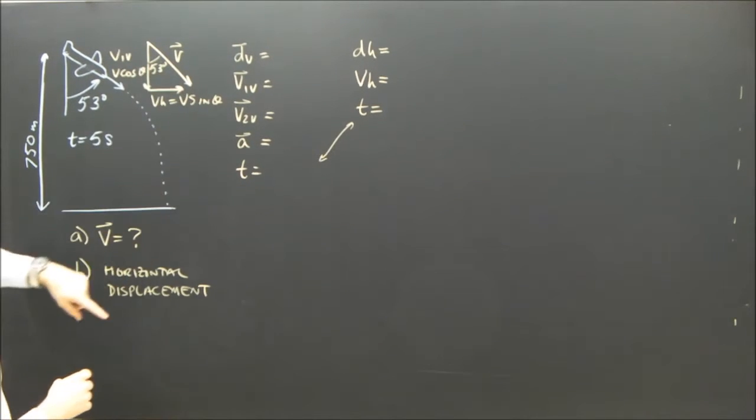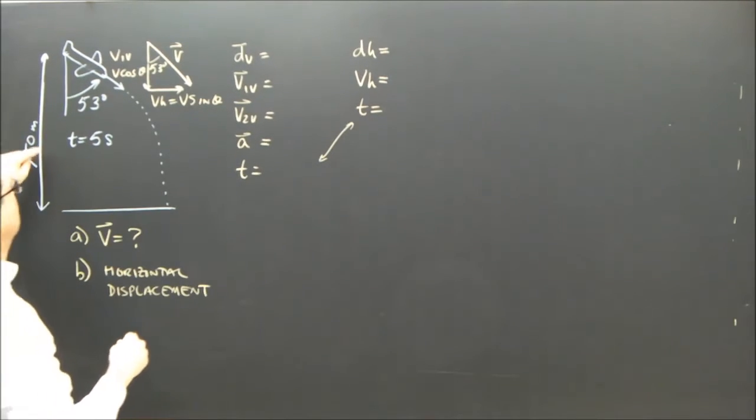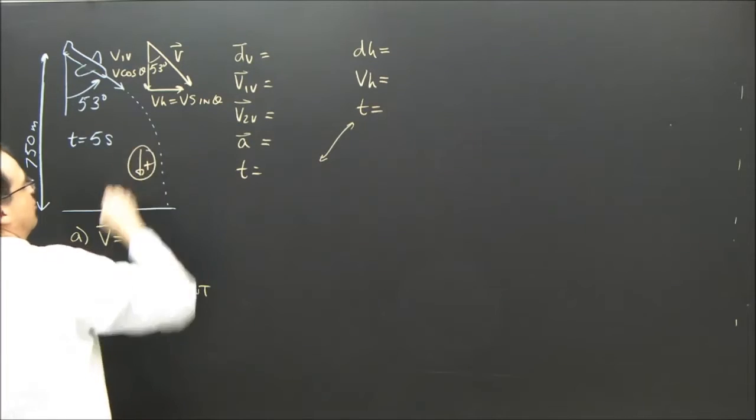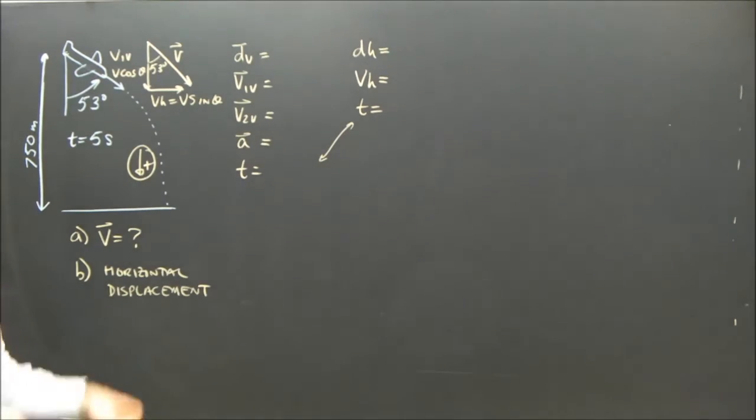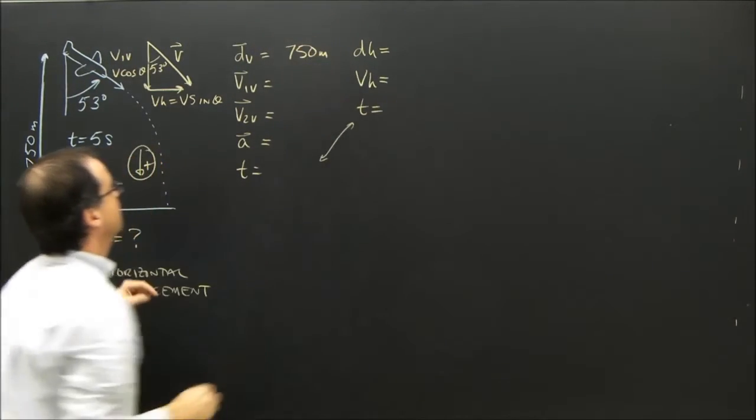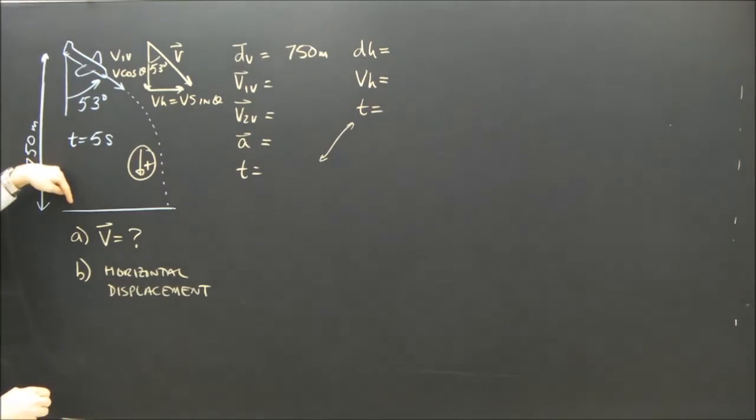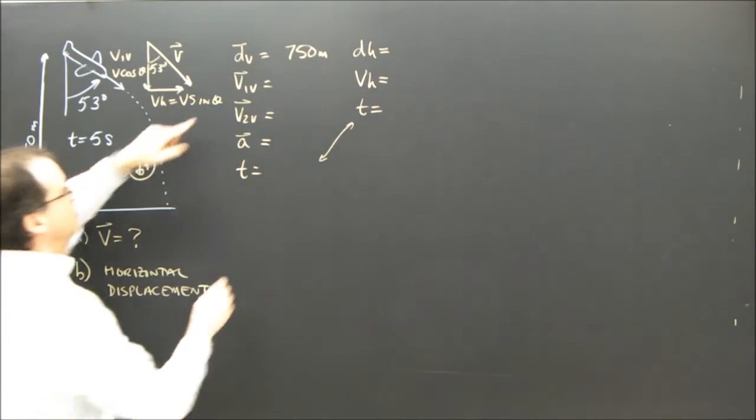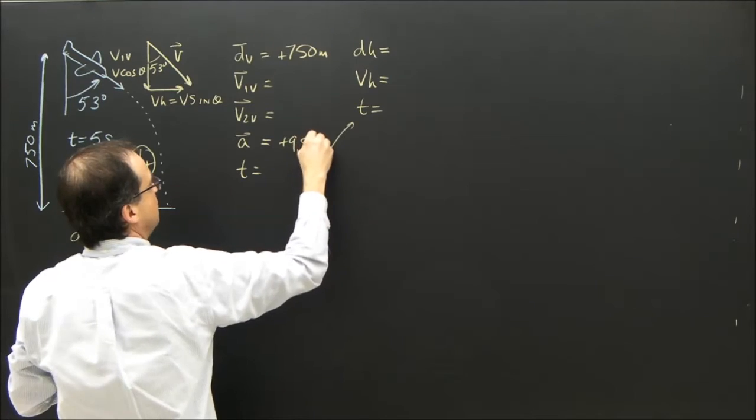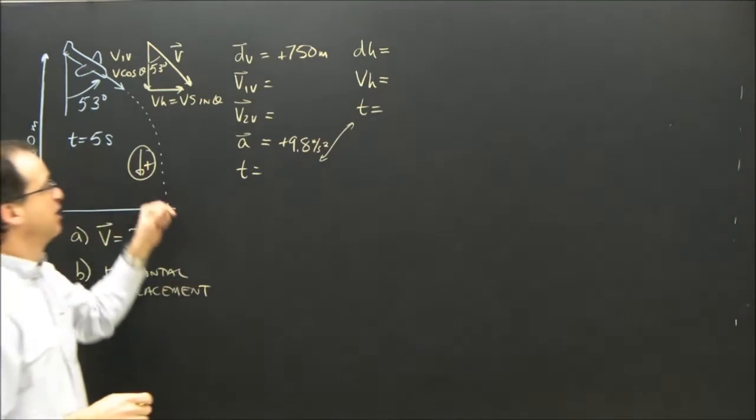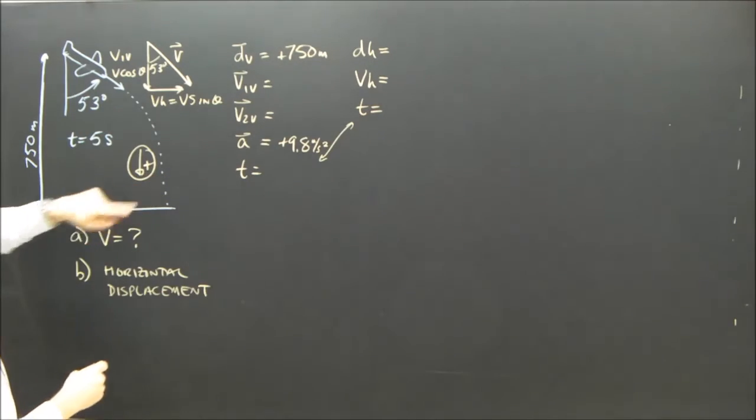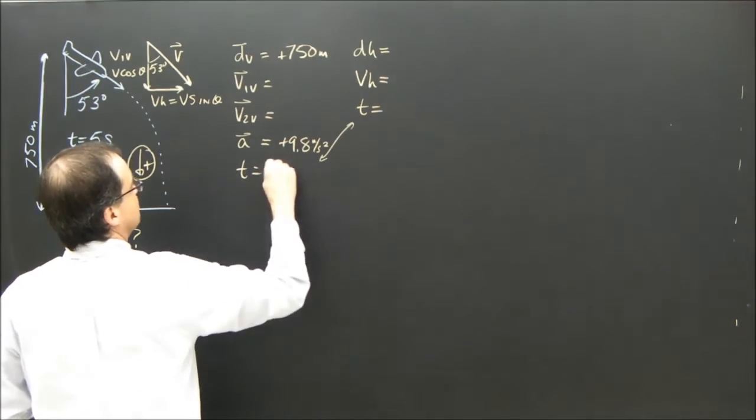So I'm going to need vertical and horizontal components. But let me write everything in the vertical. First, I need to say, let's make down positive. Okay? So if down is positive, what's the vertical displacement? 750 meters. And it started here and ended down there. So it's down, it's positive. The acceleration is positive 9.8 meters per second squared, because it's accelerating down, and I've defined down as positive. And the other bit of information I know is that it's five seconds.